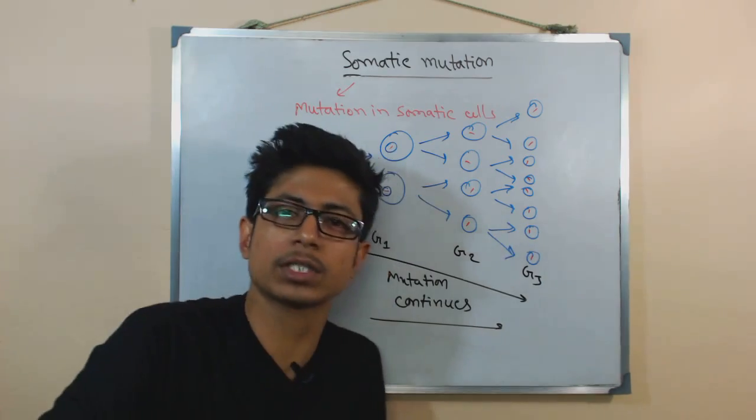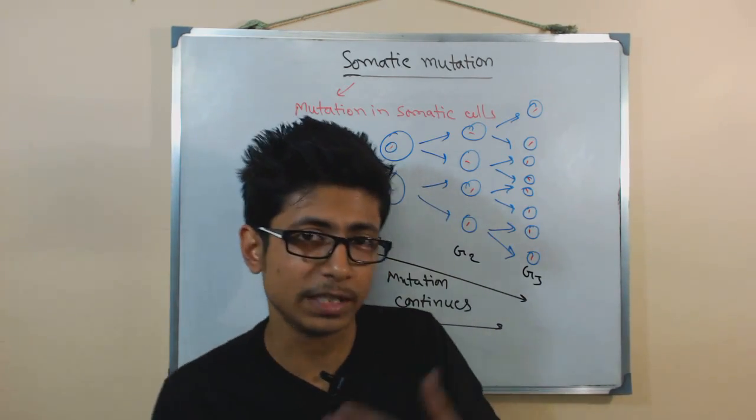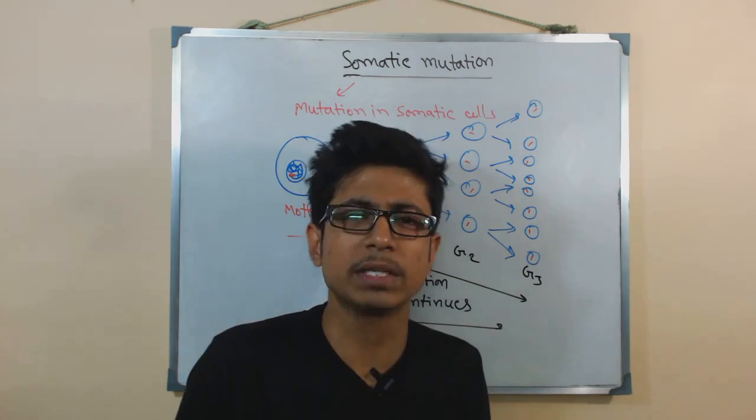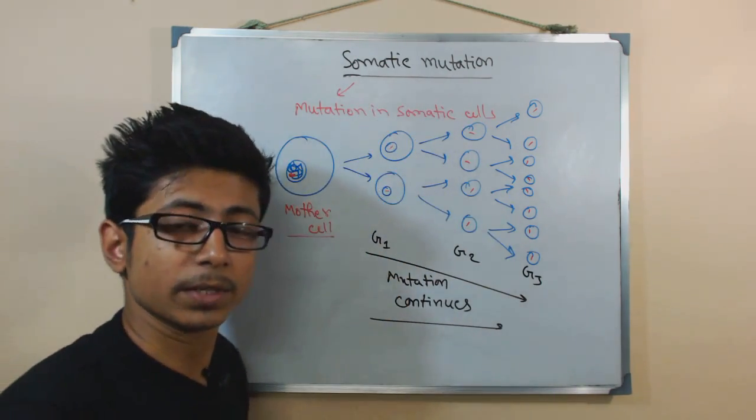There is a chance that the mutation will go away, but the chances are very rare. That's called the reversion of that mutation that might occur, but very rare case. This is the fundamental fact about somatic mutation.